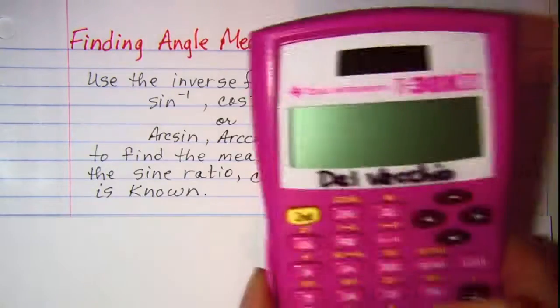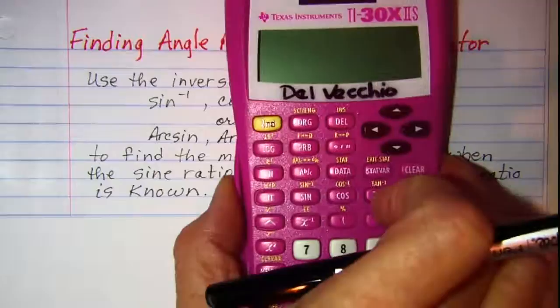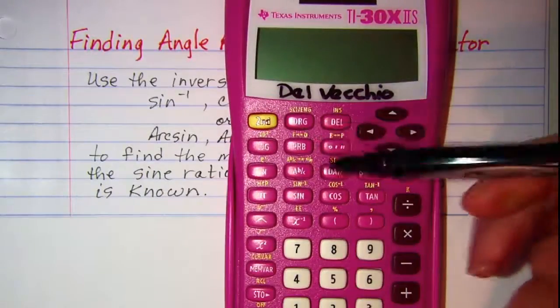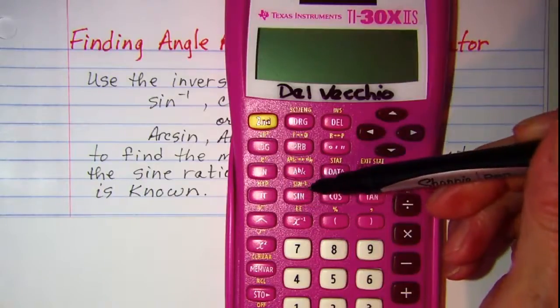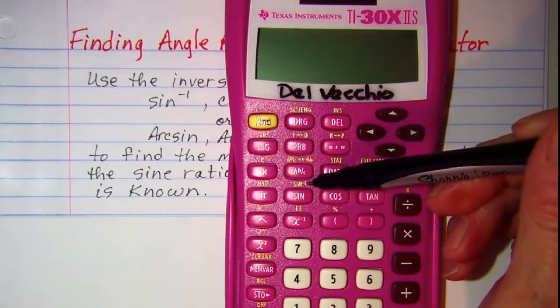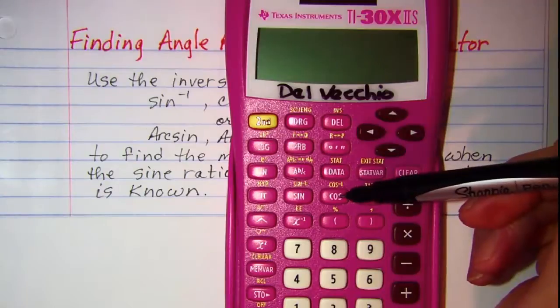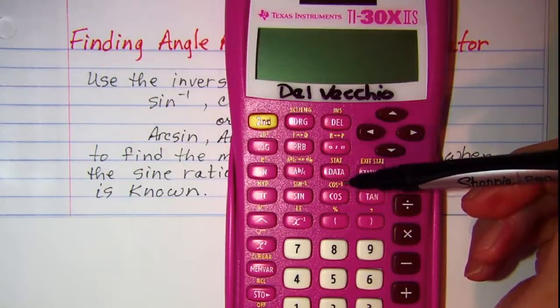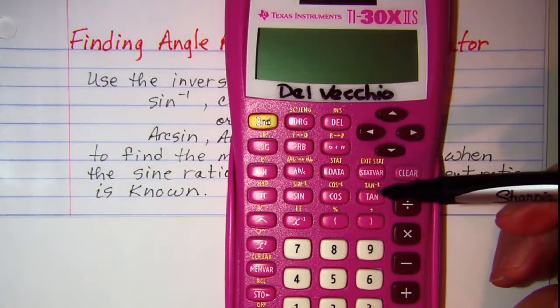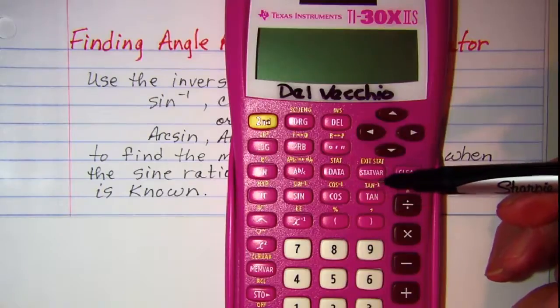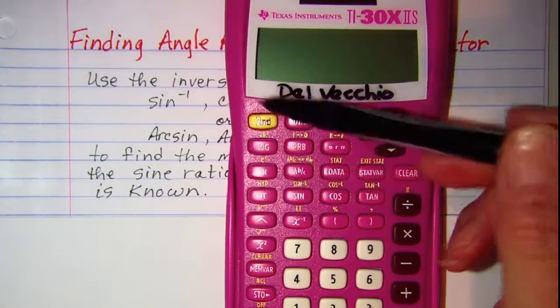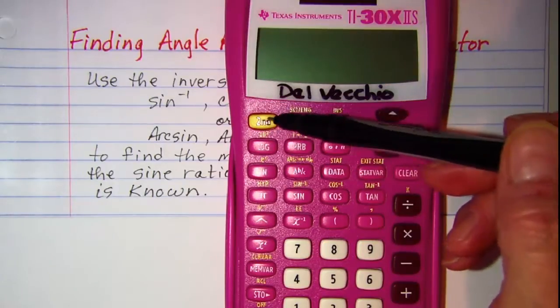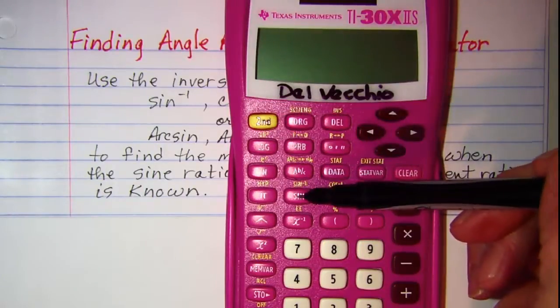On the calculator that we'll be using, these functions are accessed - notice that right above the sine key is our inverse sine, right above the cosine key is the inverse cosine, and right above the tangent key is inverse tangent. And we access those by using second, which is this yellow button, and then pressing the sine key.